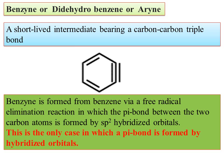This is a short-lived intermediate bearing a carbon-carbon triple bond in an aromatic system, which is benzyne. This is the benzyne. It has alternating single and double bonds, and one of the double bonds is converted to a triple bond. This is the intermediate. This is the elimination-addition reaction.